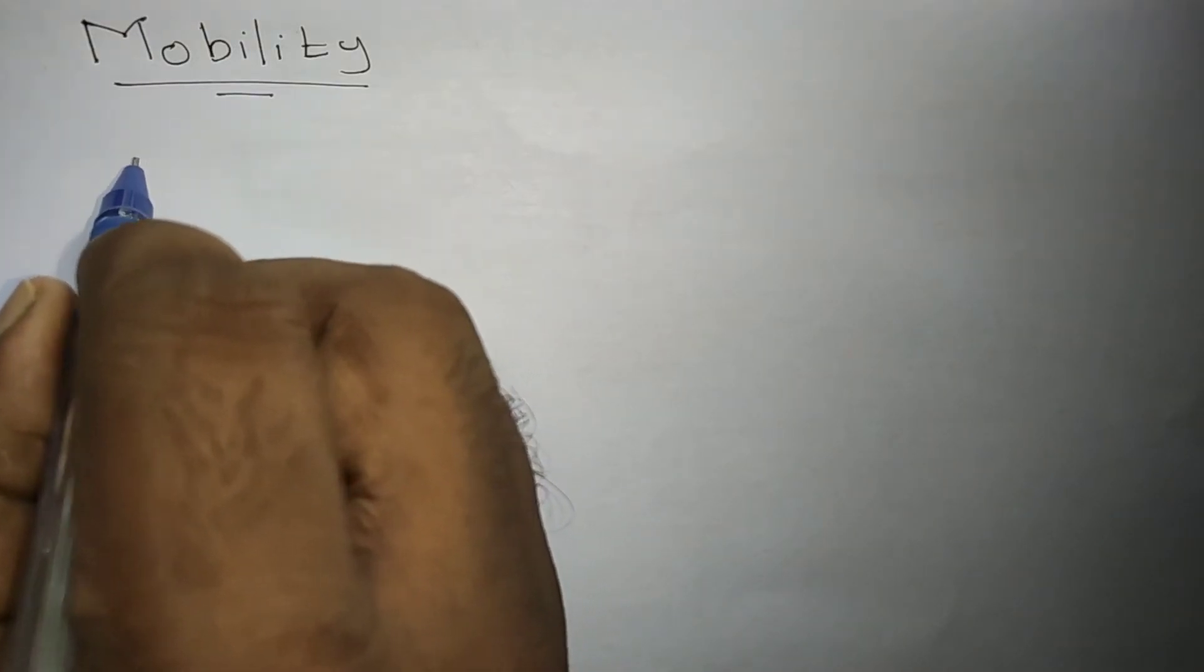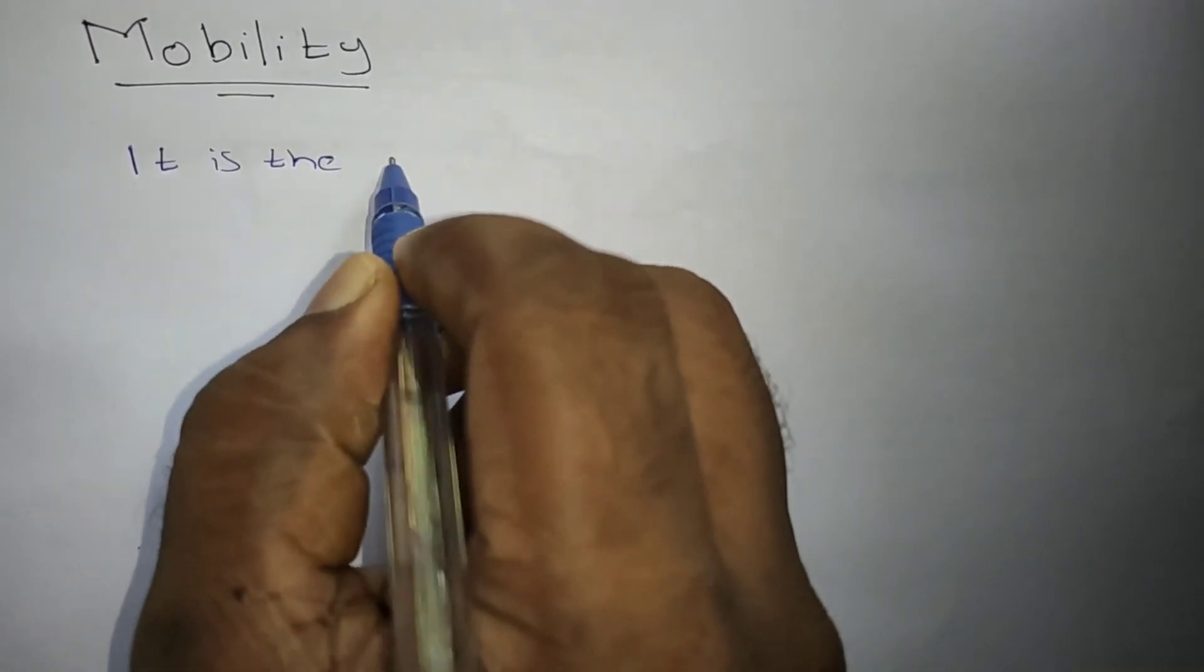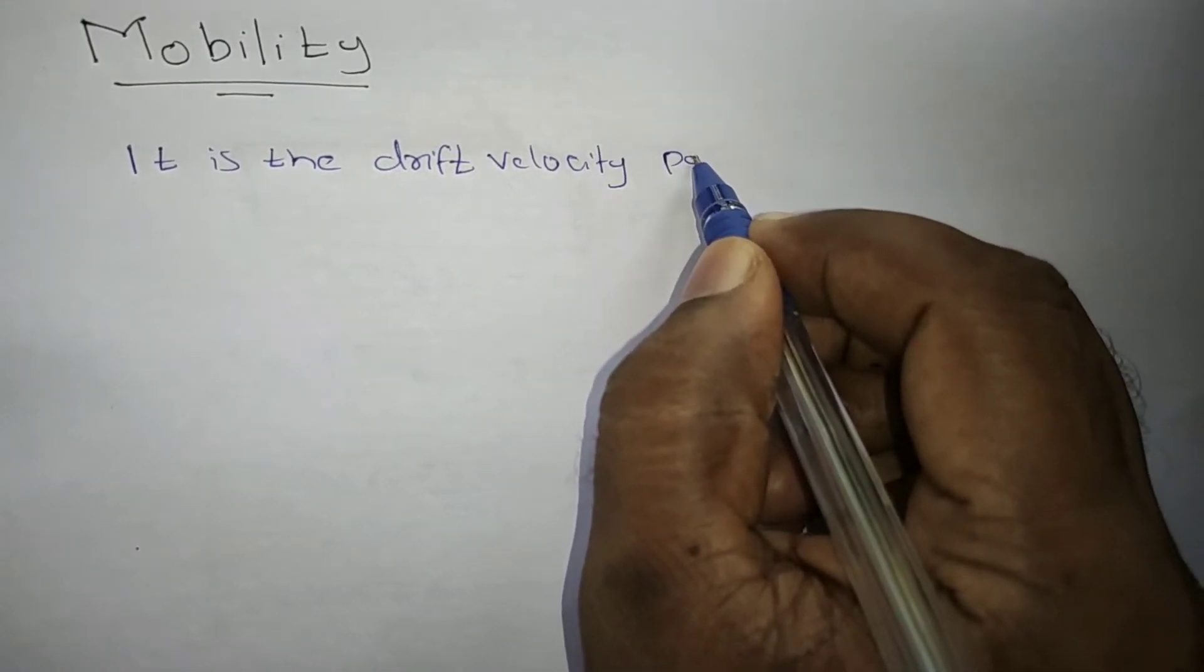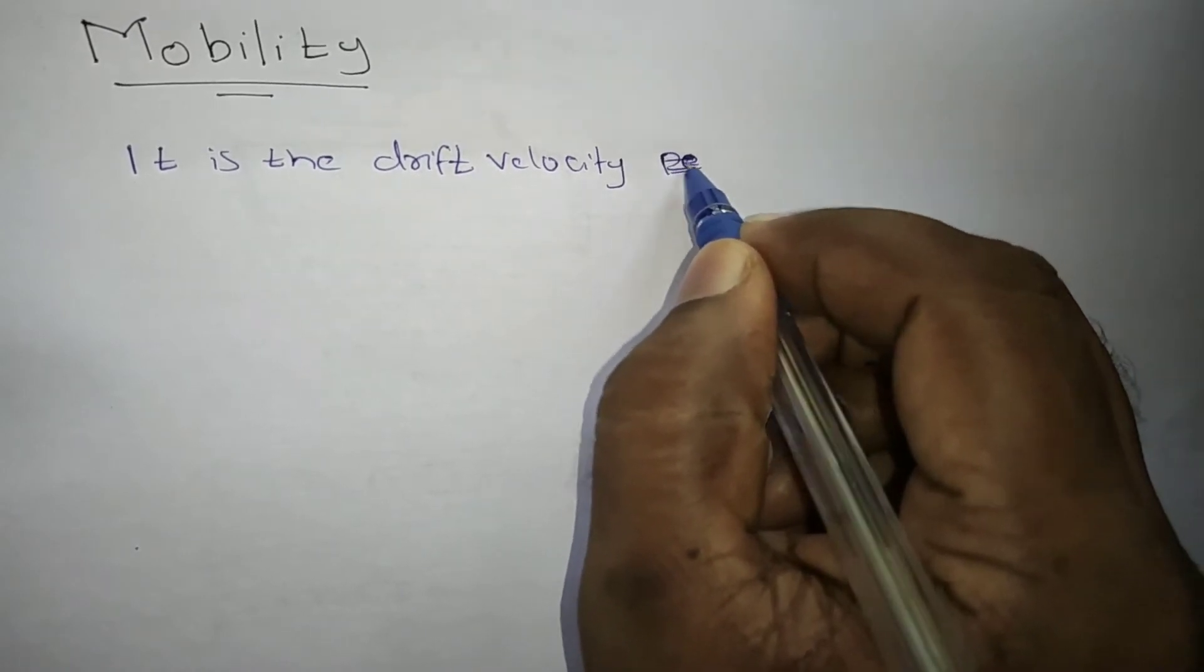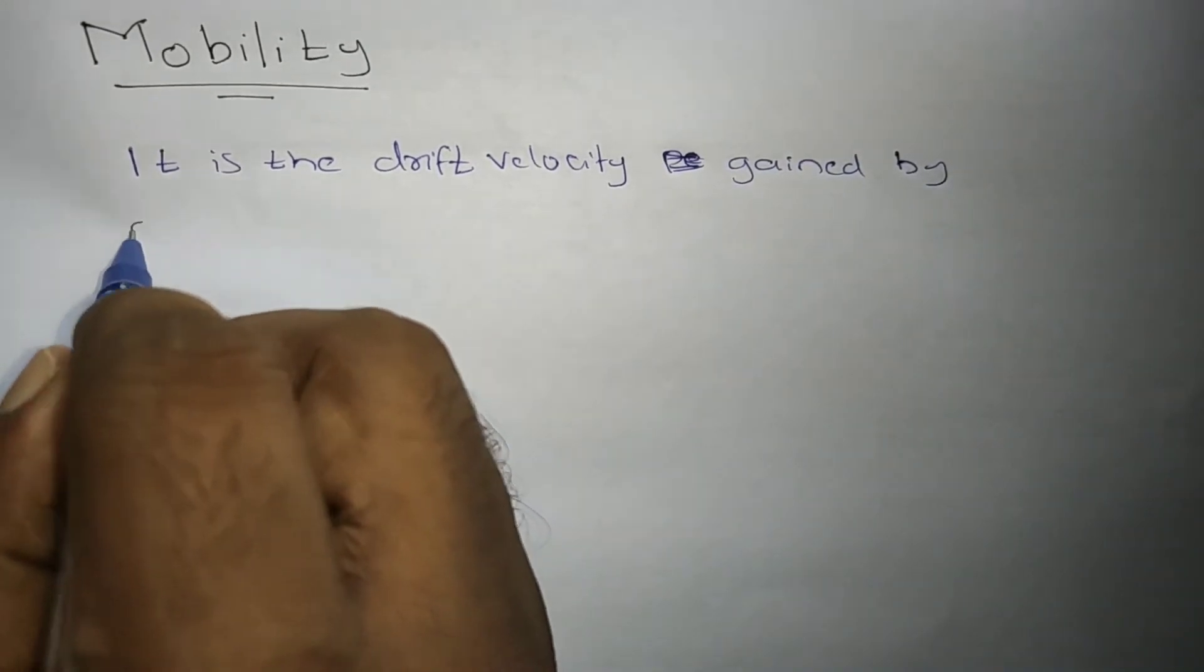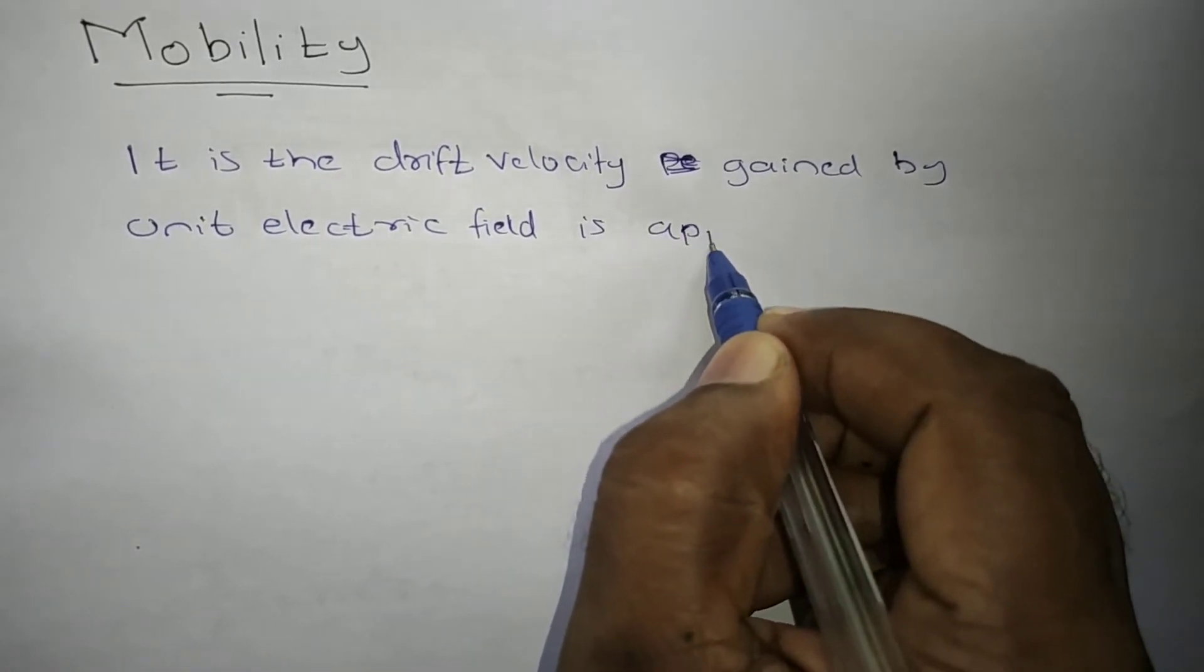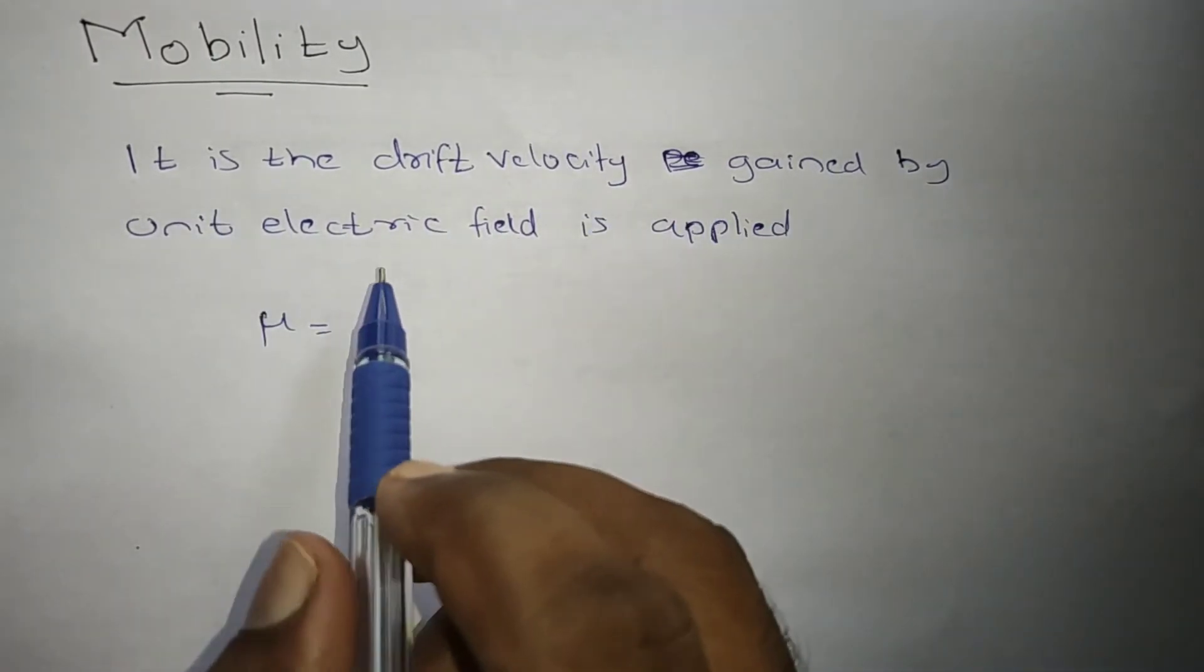That is about the drift mobility. Mobility means it is the drift velocity gained by unit electric field is applied.